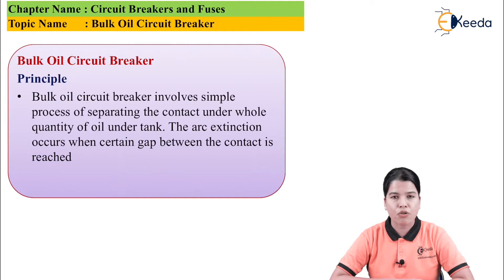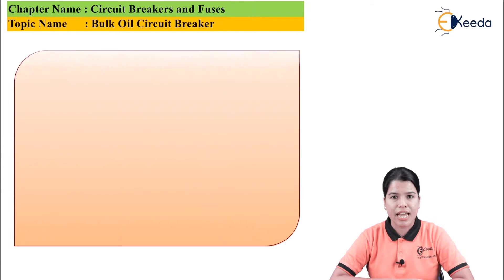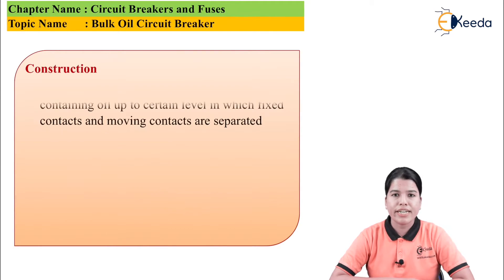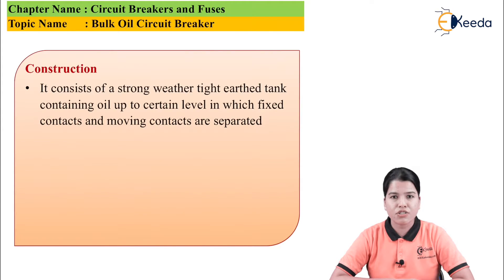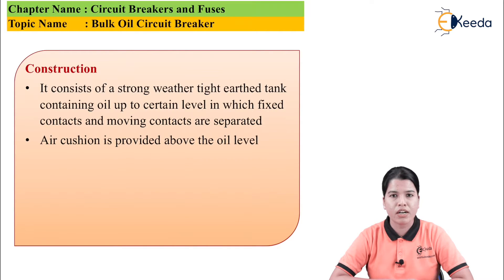Once the contacts are opened inside the oil and they reach a certain gap, the arc is extinguished. Now let us see the construction of the bulk oil circuit breaker. It consists of a strong, weather-tight, earthed tank in which the contacts are present. It is filled with oil up to a certain level, and the fixed contact and the moving contact are opened under this level of oil.